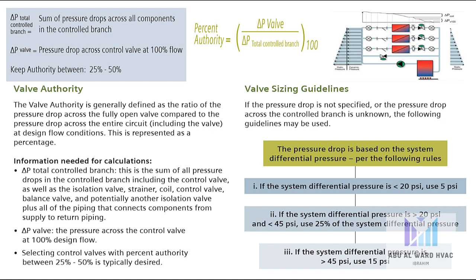We also have the valve authority, which is generally defined as the ratio of the pressure drop across the fully open valve compared to the pressure drop across the entire circuit including the valve. Percent authority equals ΔP across the valve divided by ΔP across the total controlled branch.